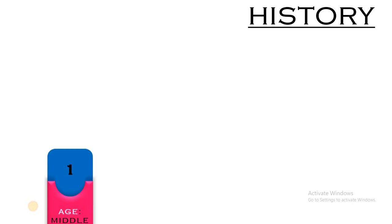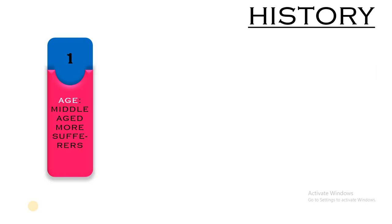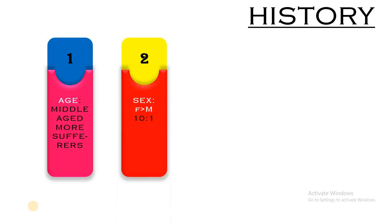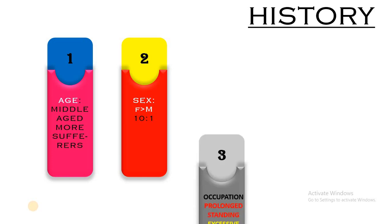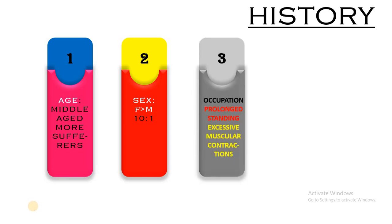A brief history is required before we start the clinical examination. First, age — varicose veins can affect individuals of all age groups, but middle-aged individuals are more commonly affected. Regarding sex, females are affected ten times more commonly than males, giving a female-to-male ratio of 10:1. Regarding occupation, prolonged standing — for example, policemen — or prolonged sitting — for example, drivers — predisposes individuals to varicose veins.